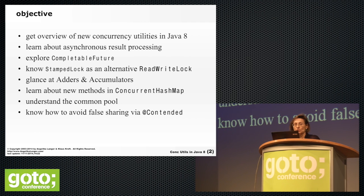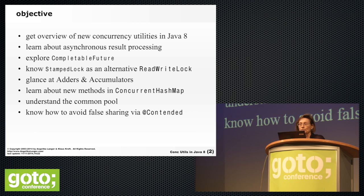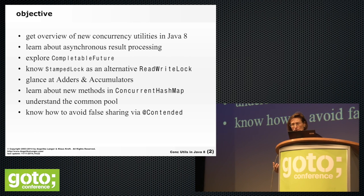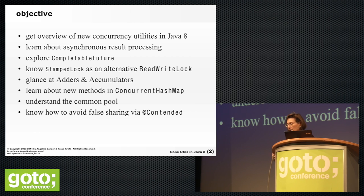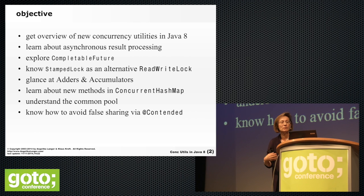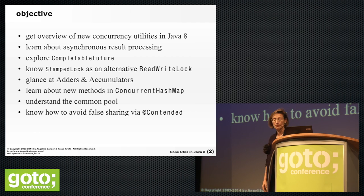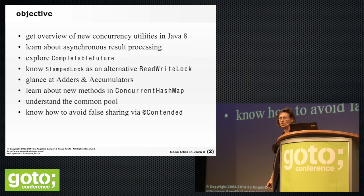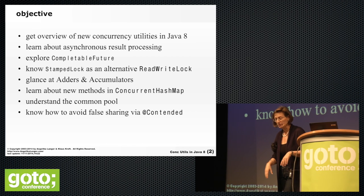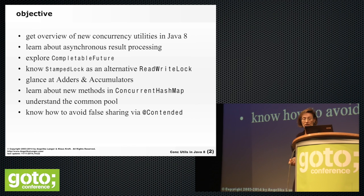Most of these additions to the concurrency utilities are ways of providing optimization. There is barely anything radically new, but most of these new abstractions support optimizations. There are also a couple of new methods in ConcurrentHashMap — added actually to the Map interface — so even single-threaded HashMap and TreeMap support new operations.